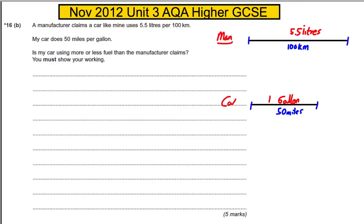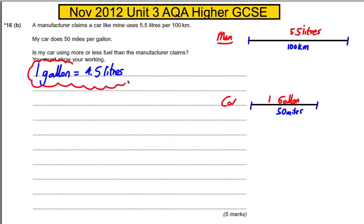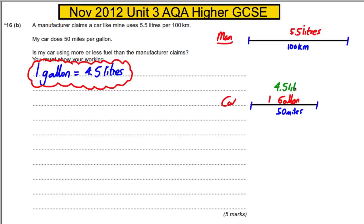Firstly, I need to recall a key fact: one gallon is equal to 4.5 liters. This is a fact you need to know for the exam — you are not told this. So on my picture, 4.5 liters corresponds to 50 miles, meaning for four and a half liters of petrol, my car goes 50 miles.